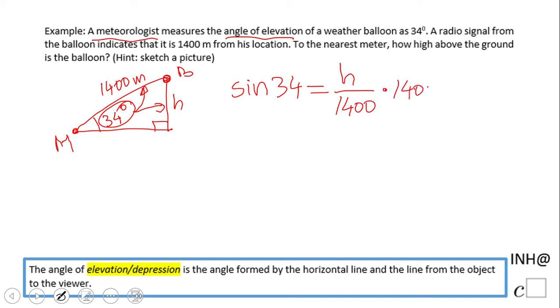Multiply both sides by 1400, and we have the exact answer: H equals 1400 times sine of 34 degrees.